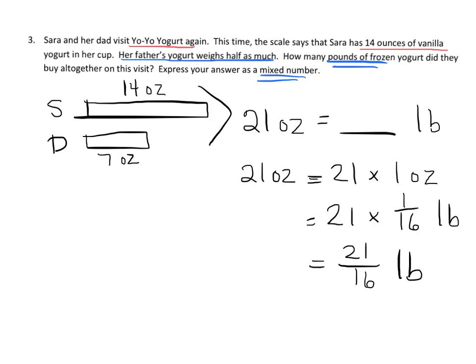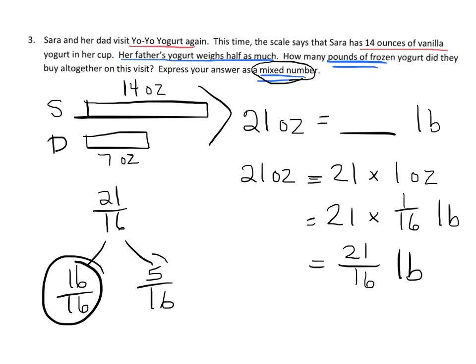And then 21 times one sixteenth is going to be 21 sixteenths pounds. And technically that's the answer, except they want us to write the answer as a mixed number. So 21 sixteenths, we can think of that as 16 sixteenths and 5 sixteenths. So that equals one pound and 5 sixteenths left over. So the answer is one and 5 sixteenths pounds.